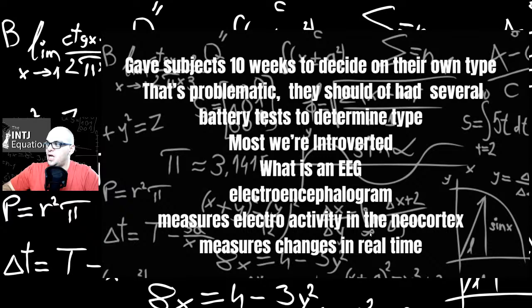He gave subjects 10 weeks to decide on their own type. That's problematic because we all know that some people just want to be a certain type and they believe that they're that type, even though all other evidence says otherwise. He does a battery of tests to make sure that people are accurately typed. I think he kind of coaches them into the right type. Most of them were introverted. An EEG, the electroencephalogram, measures the electrical activity in the neocortex, measures the changes in real time.